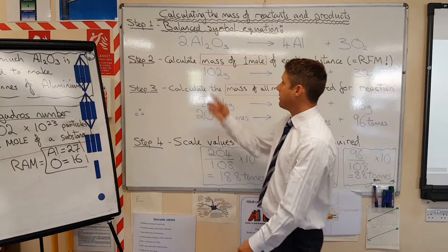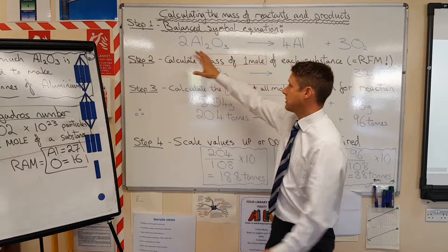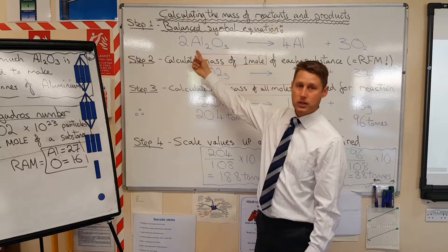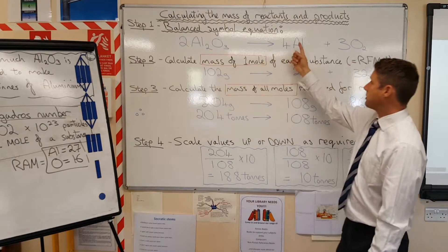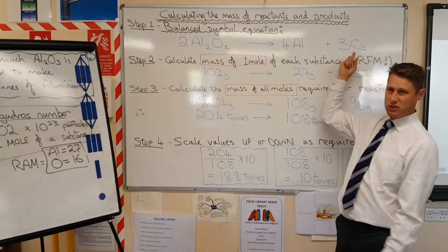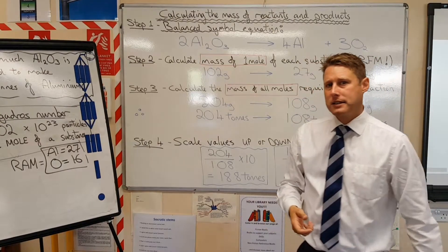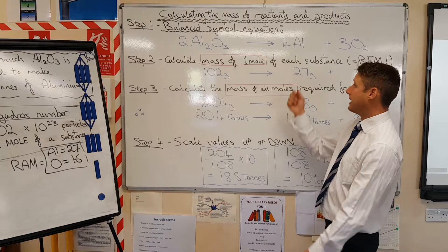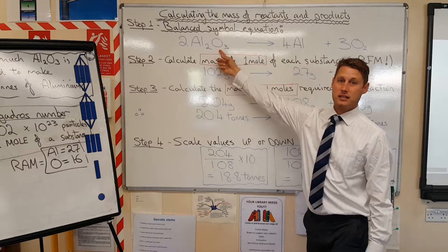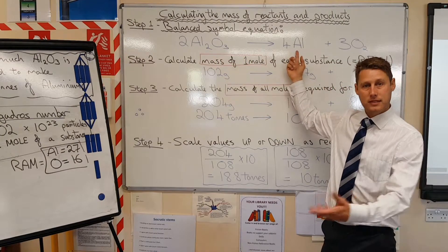So through the process of electrolysis, we're going to need aluminum oxide coming into the reaction. We are going to produce aluminum and we're going to produce oxygen from this. We've got to work on a few basics first before we can calculate exactly how much aluminum oxide is needed to make 10 tonnes of aluminum.